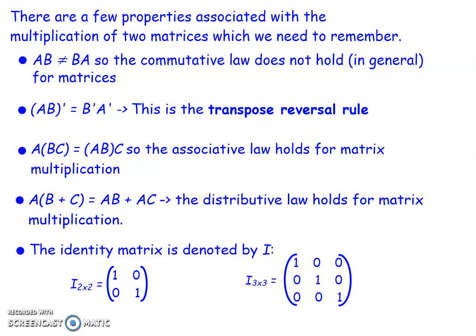The associative law holds for matrix multiplication: A(BC) equals (AB)C, so it doesn't matter which way around we group them — we get the same result. The distributive law also holds: A(B+C) equals AB plus AC, so we can multiply out the brackets and then add the results together.